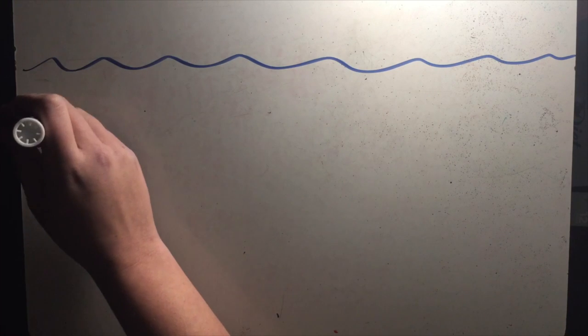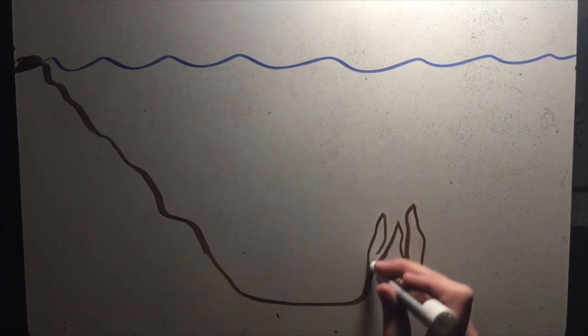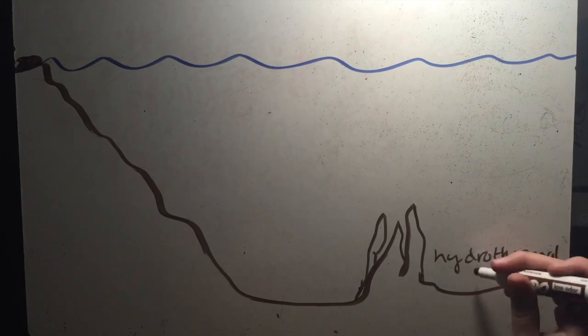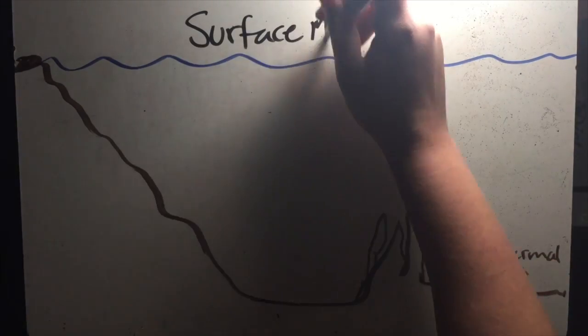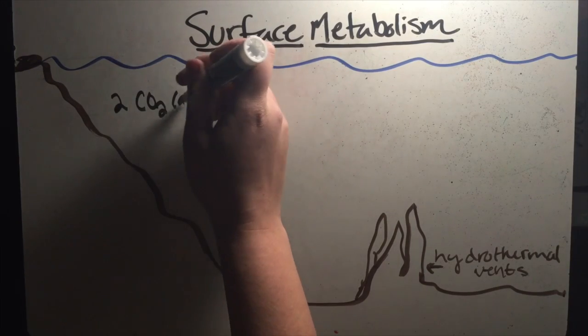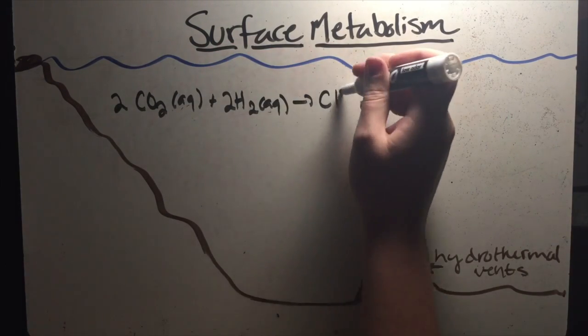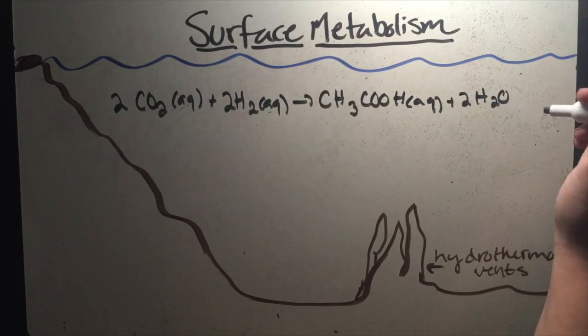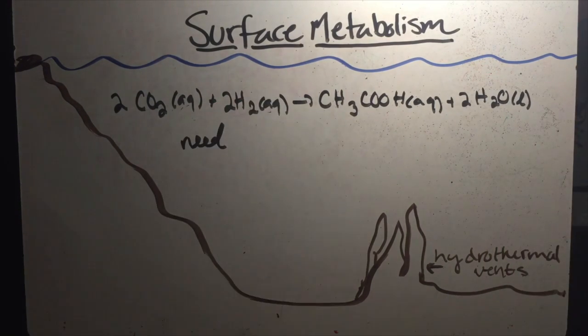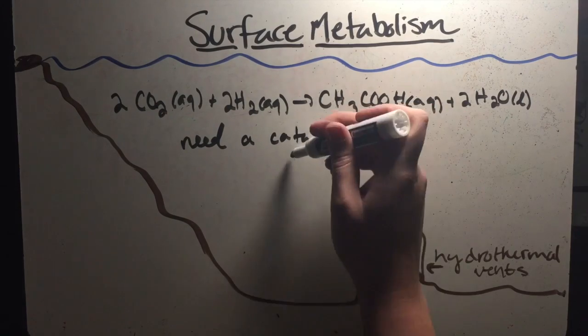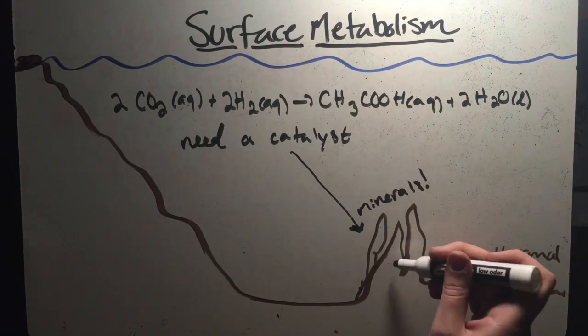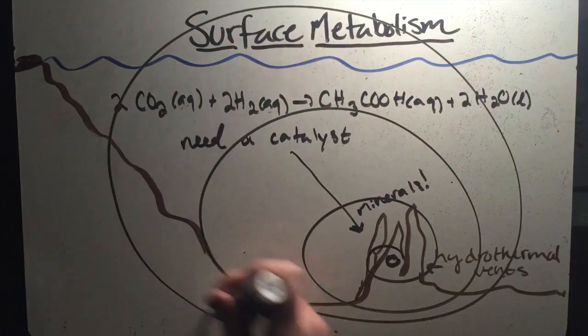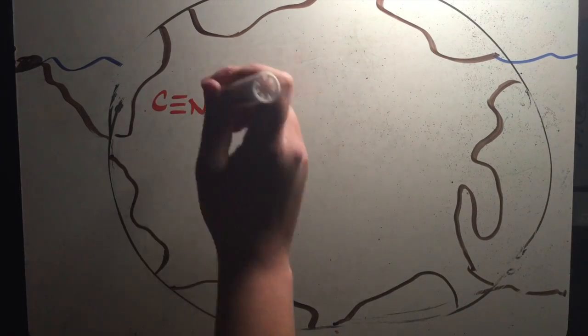The other main model of chemical evolution also starts in the ocean, but a little bit deeper down at hydrothermal vents. This model is called surface metabolism. One important reaction in the surface metabolism model is between carbon dioxide and hydrogen to form acetic acid. But to be feasible, this reaction and many others would have needed a catalyst to provide an alternate route for the reaction with a lower activation energy. Minerals in the hydrothermal vents acted as this catalyst.